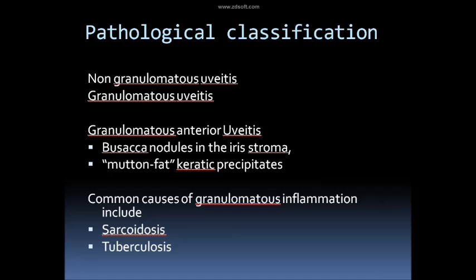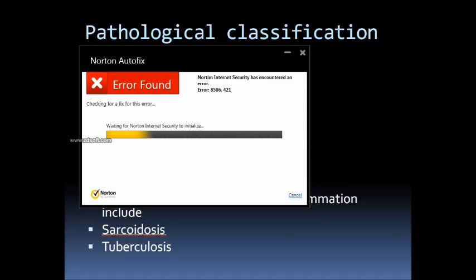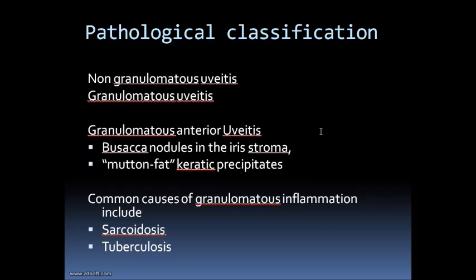Pathologically, uveitis can be classified into granulomatous and non-granulomatous types. Granulomatous uveitis is characterized by nodules in the iris in case of anterior granulomatous uveitis. The keratic precipitates found in granulomatous uveitis are called mutton fat KPs. Important causes of granulomatous uveitis include sarcoidosis and tuberculosis.